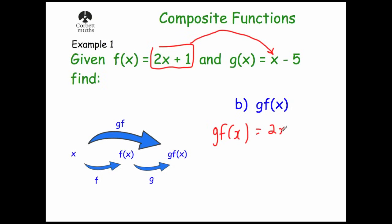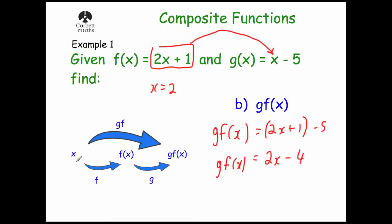So gf of x will be equal to — the x in g becomes 2x plus 1 — and then we take away 5. We didn't actually need the brackets there, so we get 2x plus 1 take away 5, which equals minus 4. So gf of x equals 2x minus 4. Let's check: with x equals 2, applying f first gives 2 times 2 plus 1 equals 5, then applying g gives 5 minus 5 equals 0. Using the composite function: 2 times 2 minus 4 equals 0. So to find gf of x, take f of x and put it into g of x.